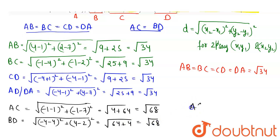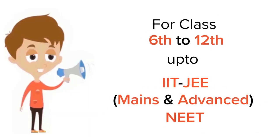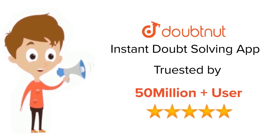So here you can see that the diagonals are equal and all sides are equal, which means A, B, C, D are the vertices of a square. This completes our solution. For class 6 to 12, both IIT JEE and NEET level, trusted by more than 5 crore students — download the Doubtnut app today.